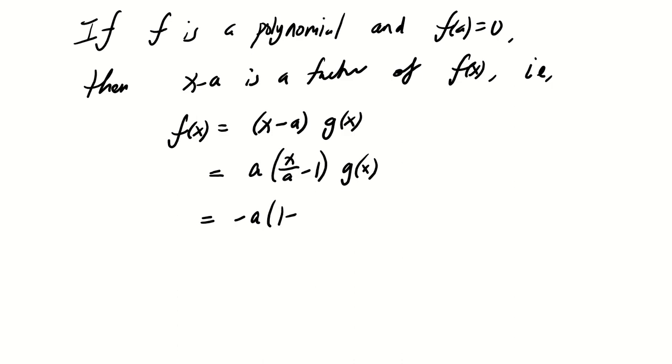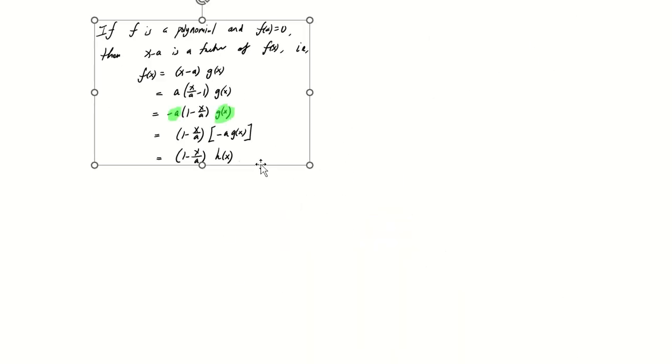We combine the negative a and g(x) and call it a new polynomial h(x). Now we can generalize this result as follows.